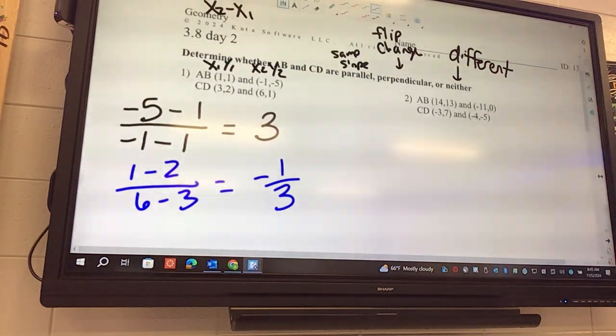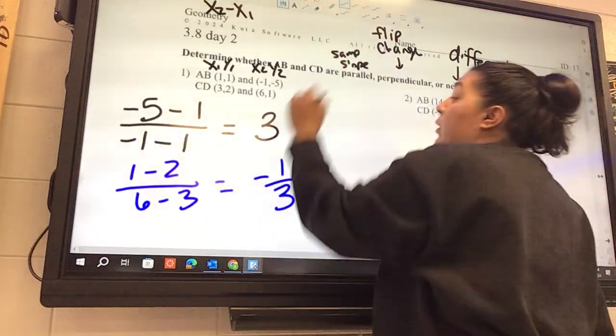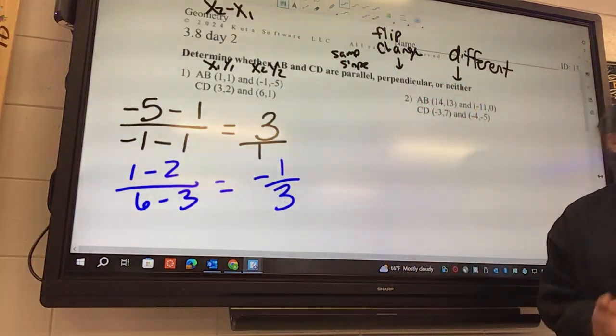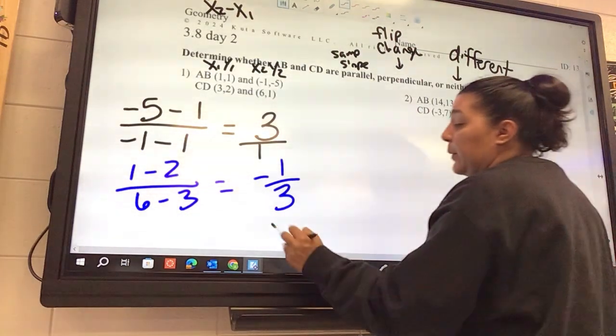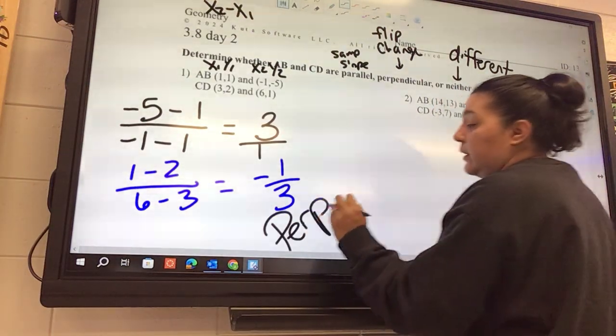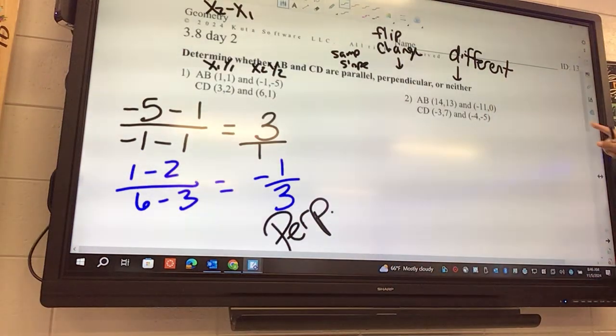So are those the same, totally different, or flipped and changed? They're flipped and changed. Why are they flipped and changed? This one is really 3 over 1, so when we flip them, what's 3 over 1? 1 over 3. And the first one is positive, the second one is negative. So this is perpendicular. And don't forget to write the word.